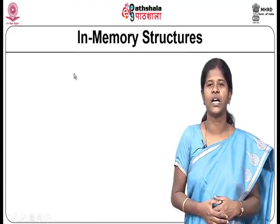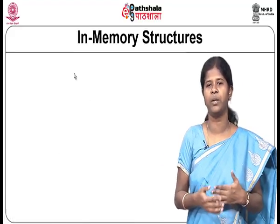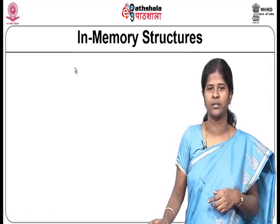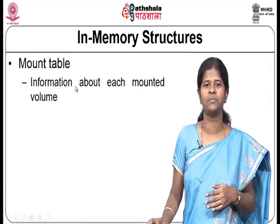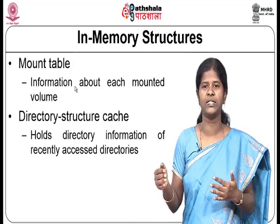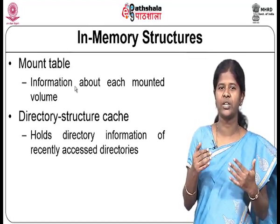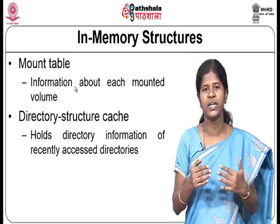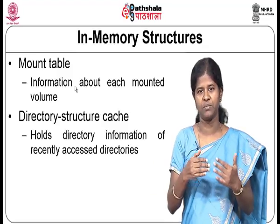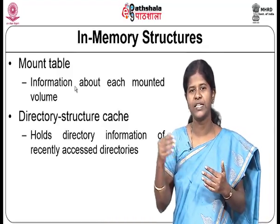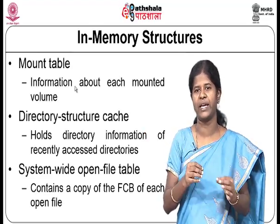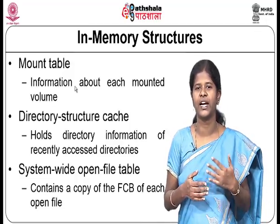In-memory structures are maintained within main memory for the implementation of the file system. One is the mount table, which holds information about mounted volumes — the directory onto which the new file system is logically attached and the device file name of the mounted file system. The second structure is a directory structure cache, which holds directory information of recently accessed directories so that you do not have to re-read from the disk.